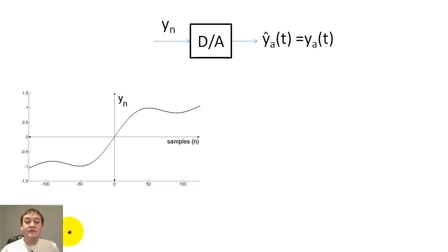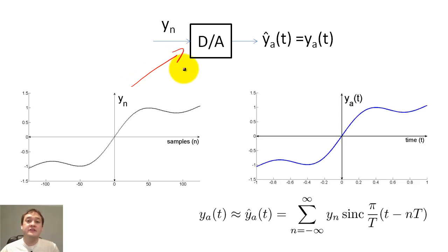Now let's return to the broad view of our filter example, where we will now send Y_n to the D to A converter to recover Y_hat_a(t). We create Y_hat_a(t) by multiplying and adding Y_n's samples by sinc functions. If we sampled above the Nyquist frequency for X_a(t), Y_hat_a(t) should perfectly match the output of our analog filter from the beginning, Y_a.